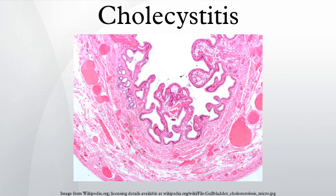Acalculous cholecystitis is more common in debilitated patients, such as those in intensive care units, and also in patients with hemolytic anemias such as sickle cell disease and diabetes mellitus. Stones in the gallbladder may cause obstruction and an accompanying acute attack. The patient might develop a chronic, low-level inflammation which leads to chronic cholecystitis, where the gallbladder is fibrotic and calcified.